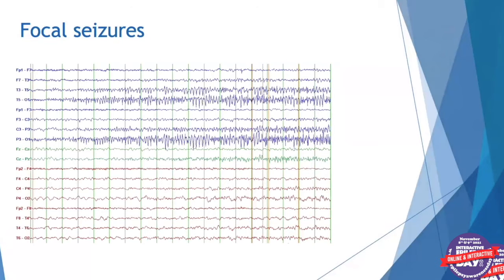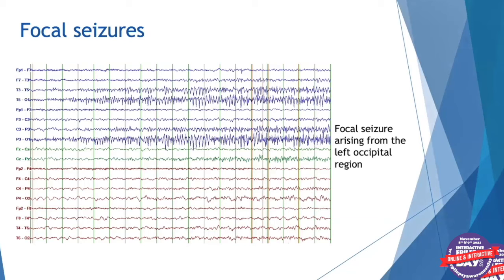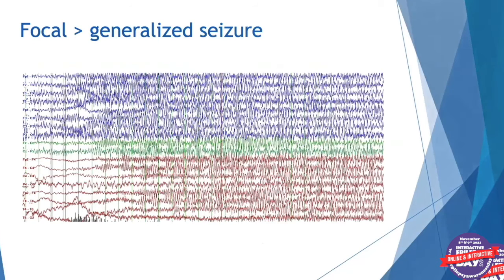We can also see focal seizures on EEG. We look for a change from the background activity that looks rhythmic and try to see where it's coming from. In this example, rhythmic higher amplitude activity is visible in the T5, P3, and O1 lines — on the left side, temporoparietal and occipital. The seizure appears to first start in the occipital region, so this is a focal seizure arising from the left occipital region. Focal seizures can also spread: in this sample from the same patient, the activity starts on the left side and spreads to the right, showing a focal seizure that spread to the whole brain.